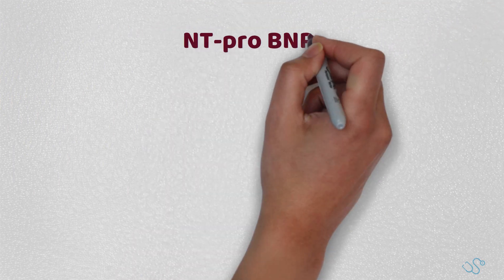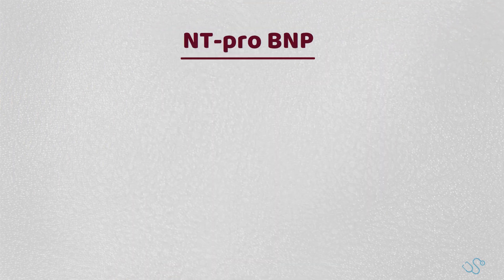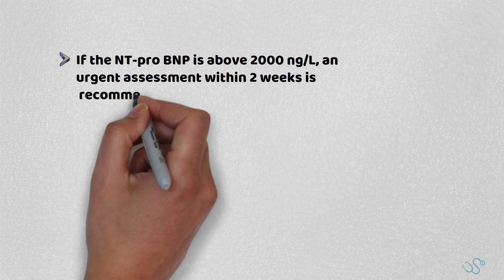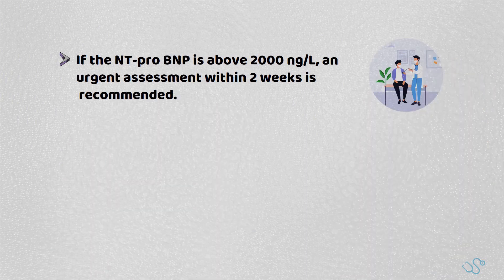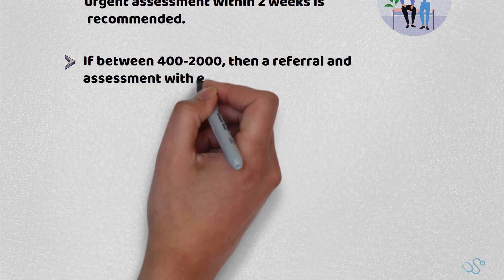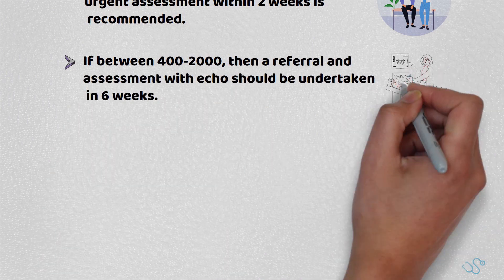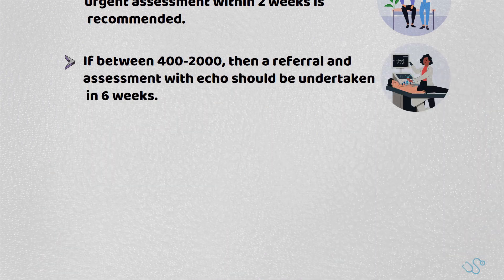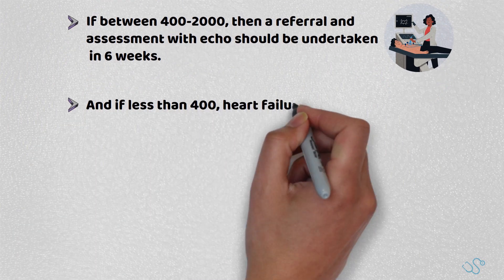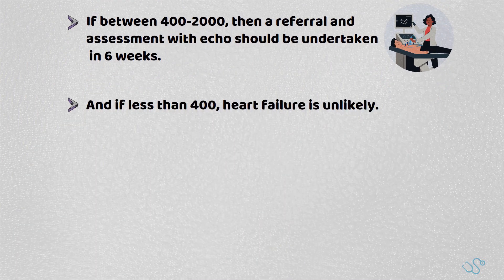NICE advises the use of NT-proBNP in patients with suspected heart failure. If the NT-proBNP is above 2000 nanograms per litre, an urgent assessment within 2 weeks is recommended. If it's between 400 and 2000 nanograms per litre, then a referral or an assessment with an echo should be undertaken within 6 weeks. And if it's less than 400, then heart failure is pretty unlikely.